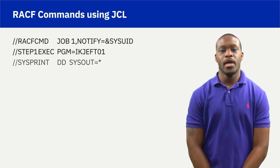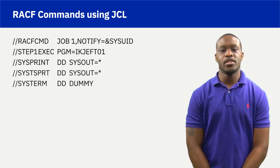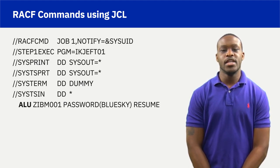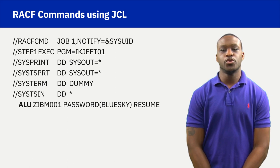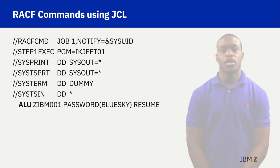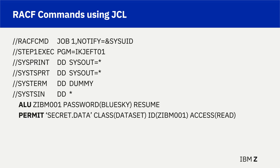Shown here is an example of RACF commands to be processed when the submitted JCL is executed. The ALU, or alter user command, is manipulating the user profile zibm001, which was previously defined. The alter user command is changing the initial password to 'blue sky', and in the event zibm001 was previously revoked due to something like too many incorrect password attempts, the resume operand clears the revoked state. The permit command is permitting zibm001, the subject, to have read access to secret.data, the object, which is a previously added protected dataset class resource. The set our ops list command lists all of the RACF global behavior options.